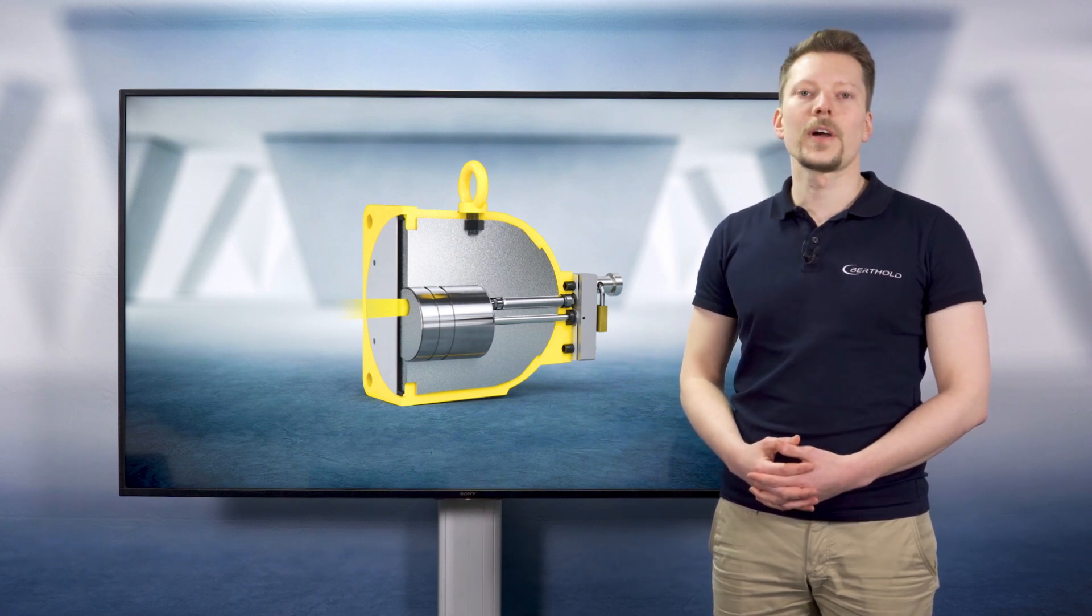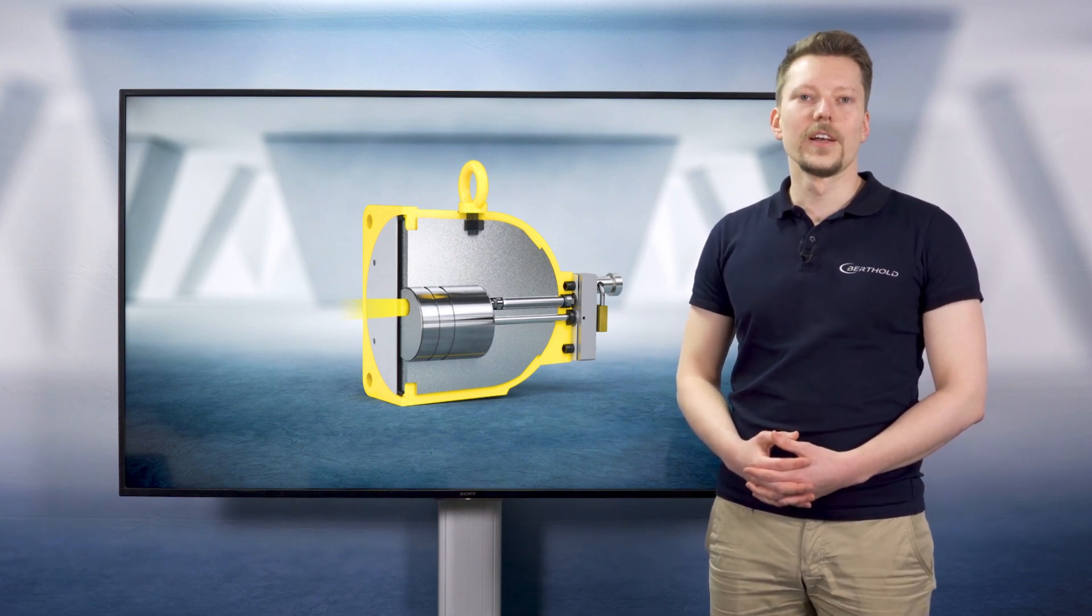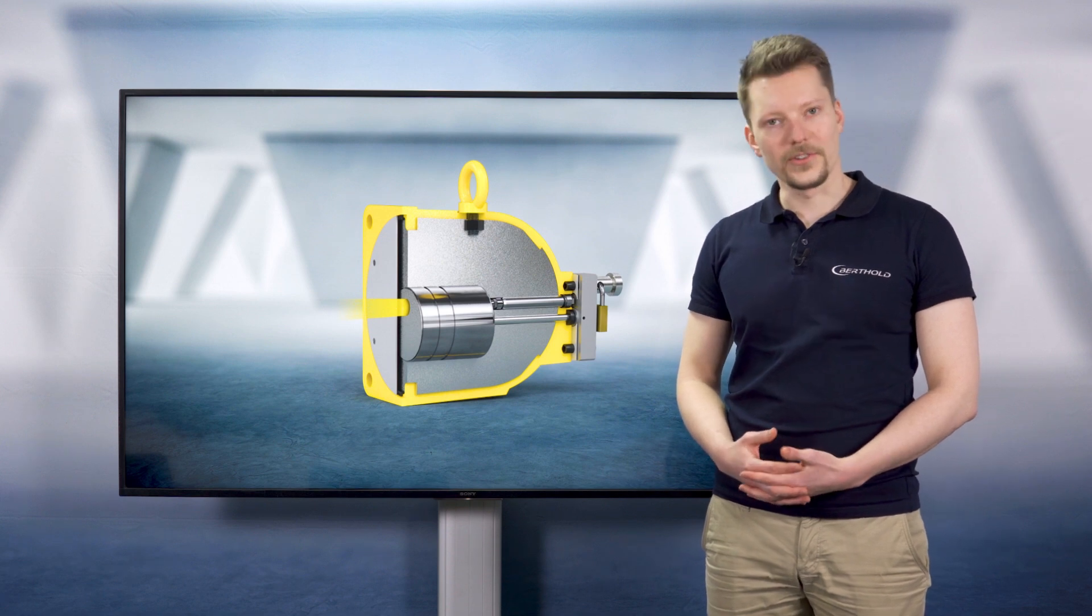For applications which require higher amounts of radiation, a shield needs to have a stronger attenuation effect. To achieve this, we also use tungsten as a shielding material which is 70% denser than lead.